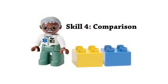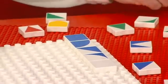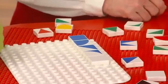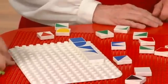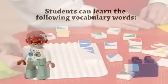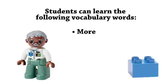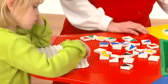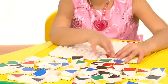Skill 4: Comparison. Students can compare tiles to determine which tiles have more or less color than other tiles. Students can learn the following vocabulary words: more, less, same, equal.